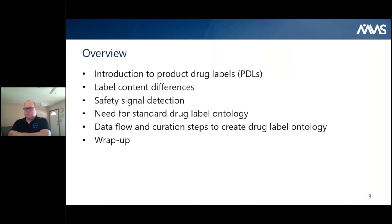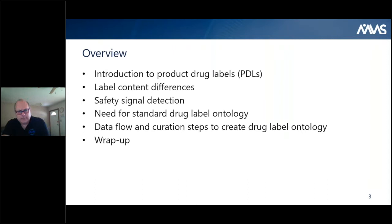First of all, an overview of why we're here. The other talk was a very good segue into this, because the drug label dictionary could serve as a valuable input to that process. We're going to introduce product drug labels, talk about label content differences between the EU and FDA, discuss safety signal detection, and introduce the need for a standard drug label ontology — which is just a fancy word for dictionary. Then we'll talk about data flow and curation steps needed to support that ontology, and then wrap up and take questions.